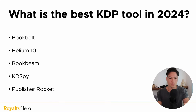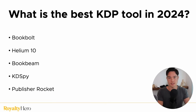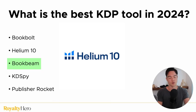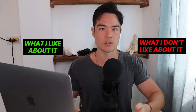In this video, I want to go over the question I get often: what is the best KDP tool in 2024? I made a video like this in the past, but over the years some tools got better and some got worse. So I'm going to compare the top five tools people use — BookBolt, Helium 10, BookBeam, KD Spy, and Publisher Rocket — and explain how each works and which tool is best for what kind of people. I'll give you my pick for the best one at the end.